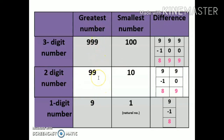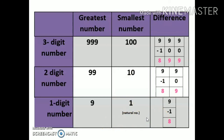The greatest two-digit number is ninety-nine, because after ninety-nine comes one hundred which is a three-digit number. The smallest two-digit number is ten, so the difference is ninety-nine minus ten, which equals eighty-nine. The greatest one-digit number is nine. Since we are working with numbers up to nine thousand nine hundred ninety-nine only, negative numbers are not covered at this stage, so the smallest one-digit number is one — one is the smallest natural number. Therefore nine minus one equals eight is the difference.